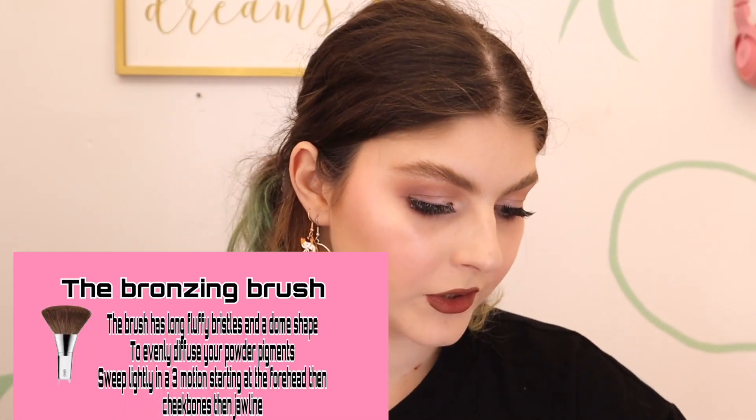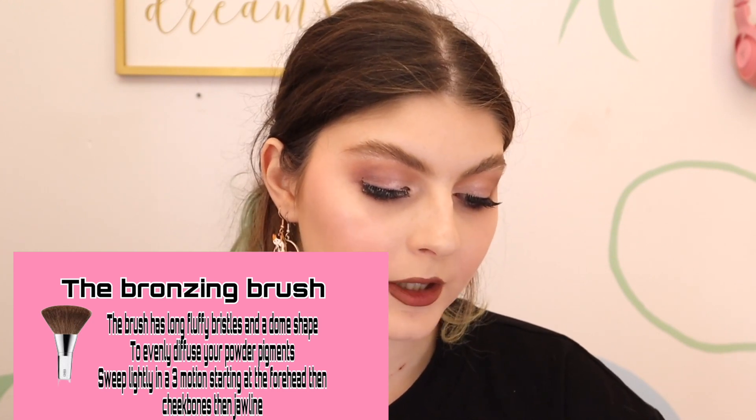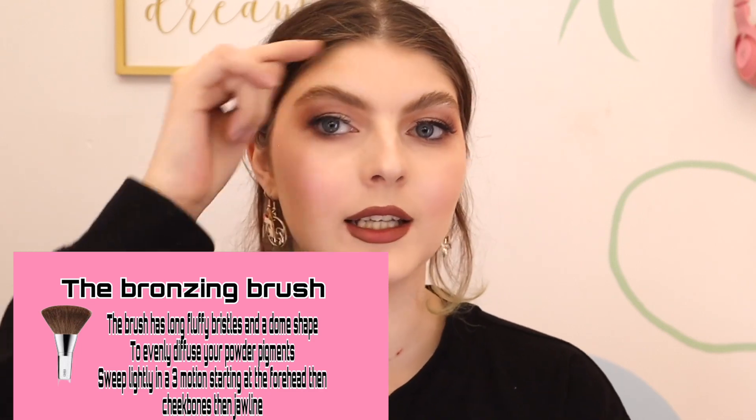The bronzing brush has long, fluffy bristles and a dome shape to evenly diffuse your powder pigments. With bronzer, you want to do it in a three motion. Find where your natural cheekbone placement is and apply right underneath that, bringing it up to your temple and a little on your jaw where the sun would naturally hit — kind of like a three. Just lightly brush and buff in that three motion.